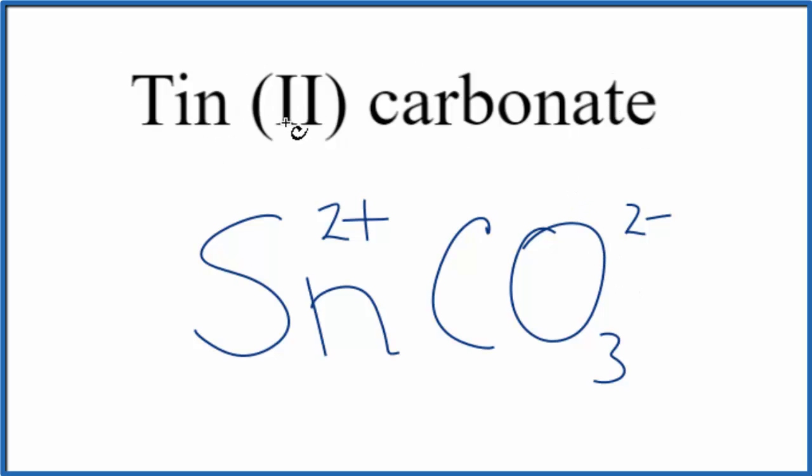Since tin(II) carbonate is a neutral compound, there's no ion written after this, these have to add up to zero. We have a metal and a group of nonmetals, it's an ionic compound. 2+, 2-, that adds up to zero. So this is the formula for tin(II) carbonate.